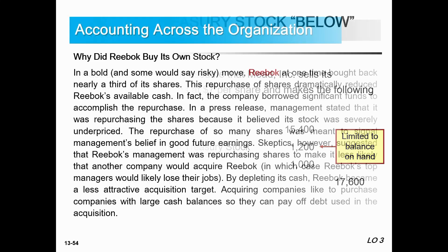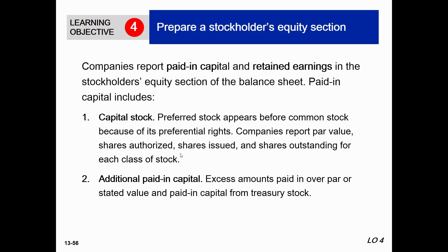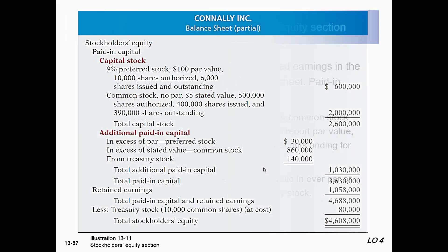That concludes the discussion of treasury stock. Let's move to learning objective number four: preparing the stockholders' equity section. Companies report paid-in capital and retained earnings in the stockholders' equity section of the balance sheet. Paid-in capital includes capital stock — preferred and common stock — and additional paid-in capital, which includes paid-in capital in excess of par for common stock, preferred stock, and from treasury stock. Retained earnings are also part of equity.